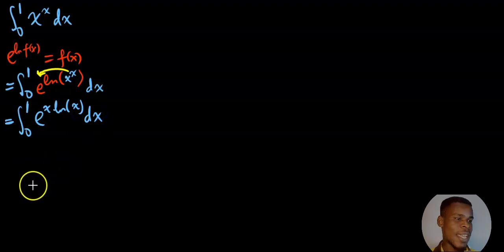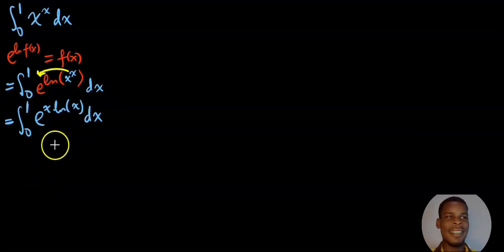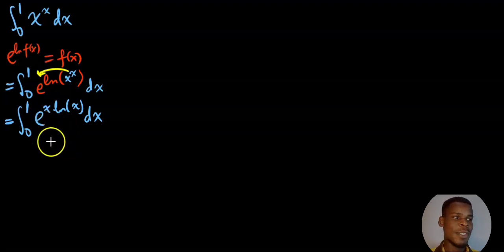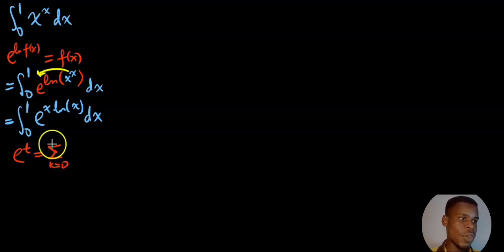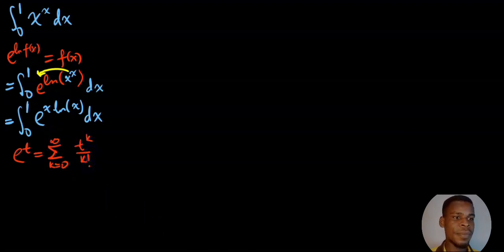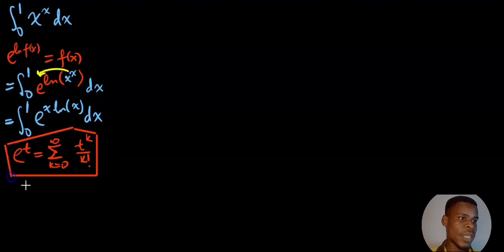Now is the time to do some very interesting stuff. I'm going to expand this using the Taylor series expansion of the natural exponential function. For the natural exponential function, we have that e raised to the power of some t can be written as the sum, using k as the sum index, from k equals 0 up to infinity, of t raised to the power of k divided by k factorial.